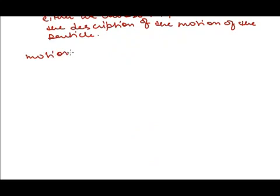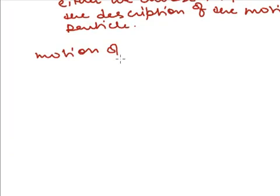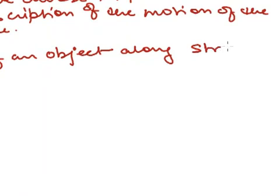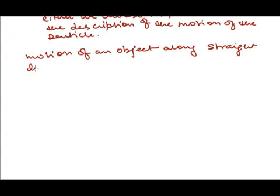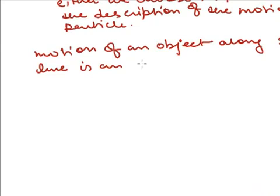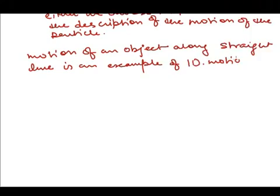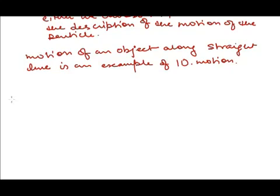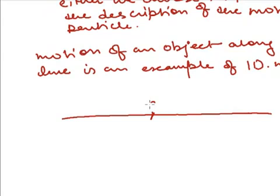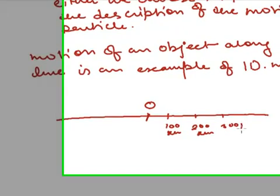Motion of an object along a straight line is an example of motion in one dimension. Position of any object can be measured with respect to origin. This is the line of motion of the particle. This is the origin from where the particle starts. This is suppose 100 kilometers, 200 kilometers, 300 kilometers and so on.